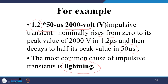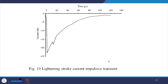The notation for an impulsive transient is written as: 1.2 × 50 microseconds, 2000 V — meaning a rise time of 1.2 microseconds to a peak of 2000 V, decaying to half peak in 50 microseconds. This is the example of the lightning stroke current impulsive transient. The current can be of either polarity, measured in kiloamperes. The rise time can be calculated from the waveform — approximately 24 microseconds in this example. This is generally how impulsive transients are classified.